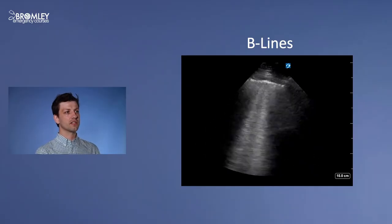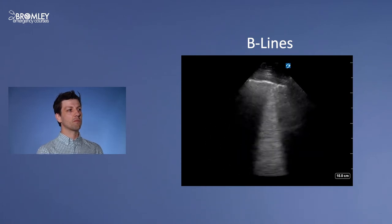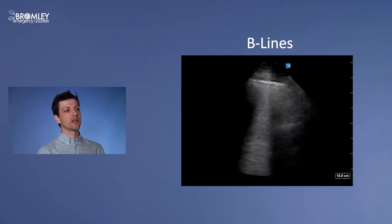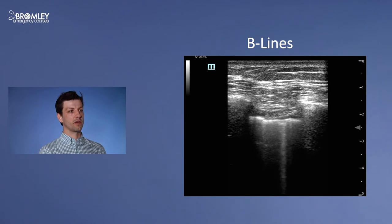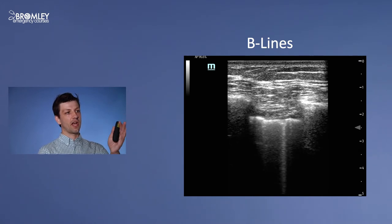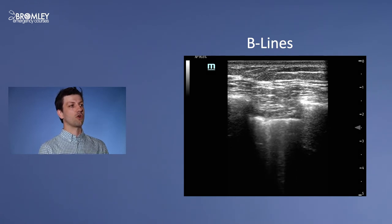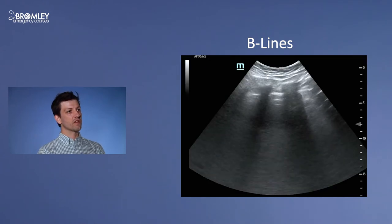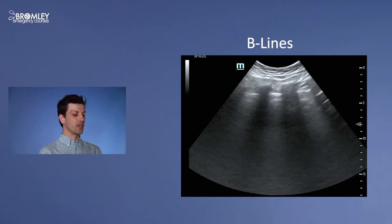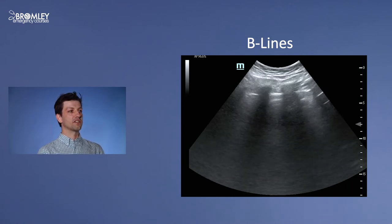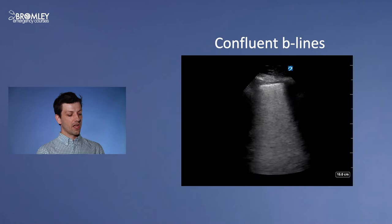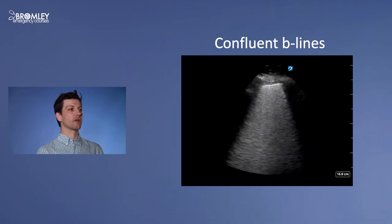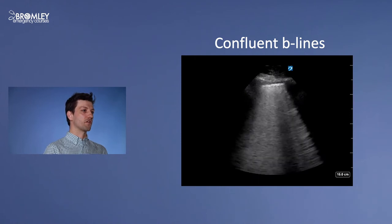Here we see B lines with an irregular pleural line, likely infective. In the linear image, B lines emanate from the pleural line and extend all the way down the image — very different to the comet tail artefact. Here is another video taken with a curvilinear probe showing three rib spaces, with B lines again emanating all the way through the entire depth of the image. In severe interstitial syndrome, the B lines become confluent, as shown in this video.